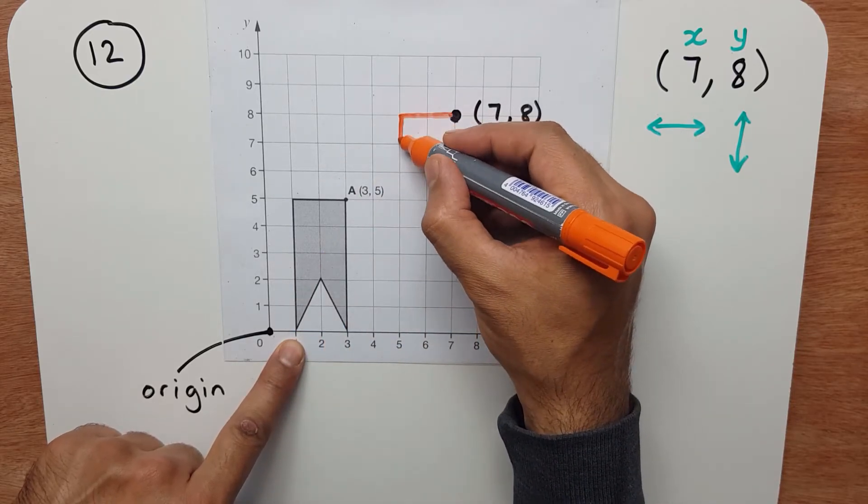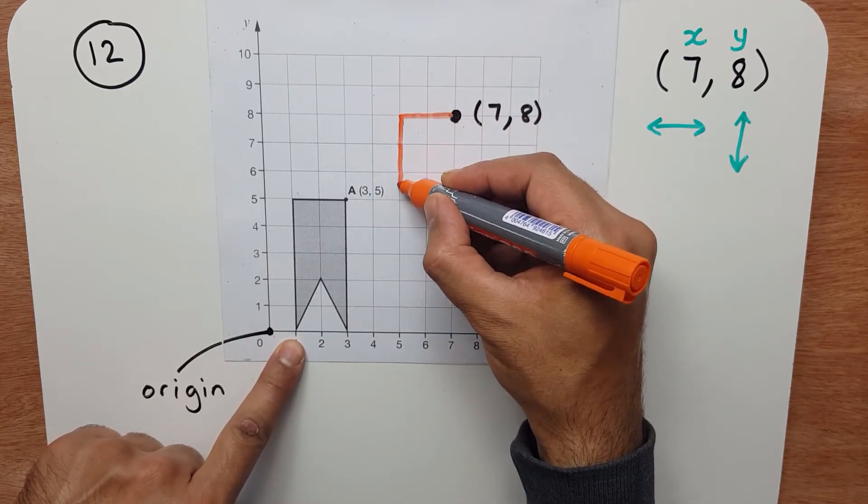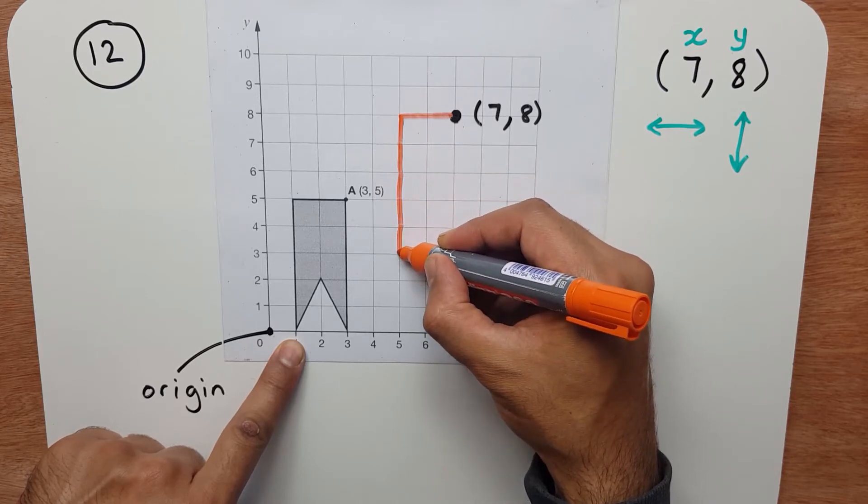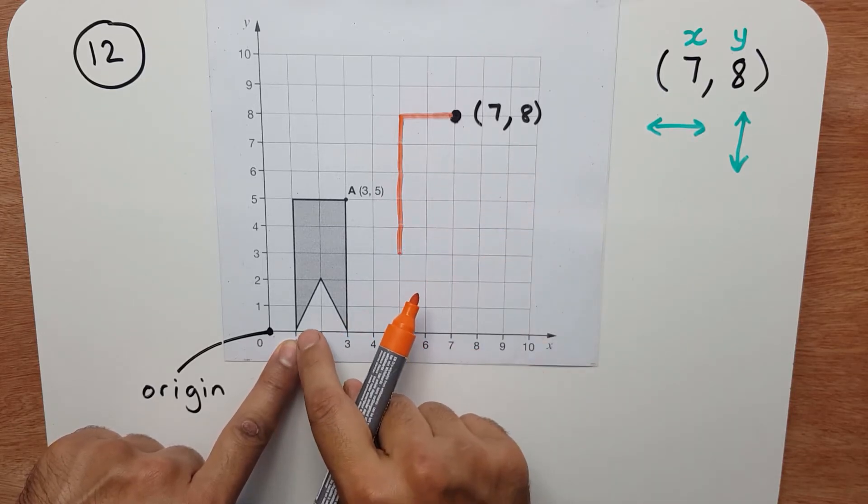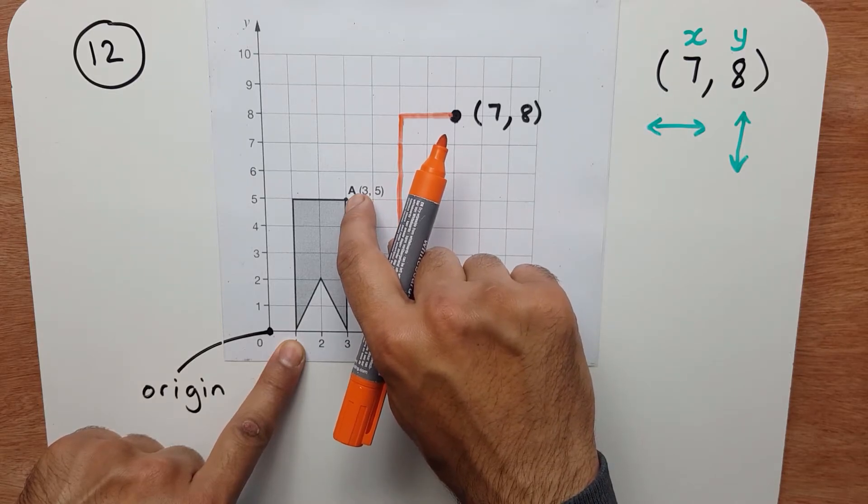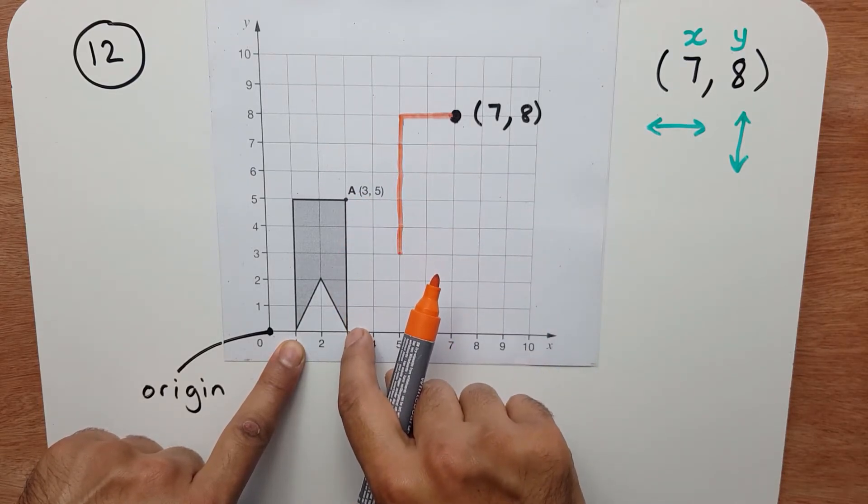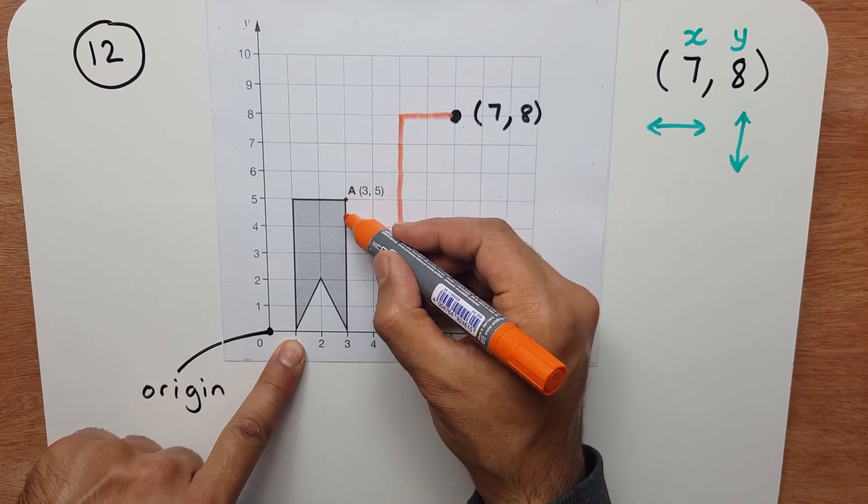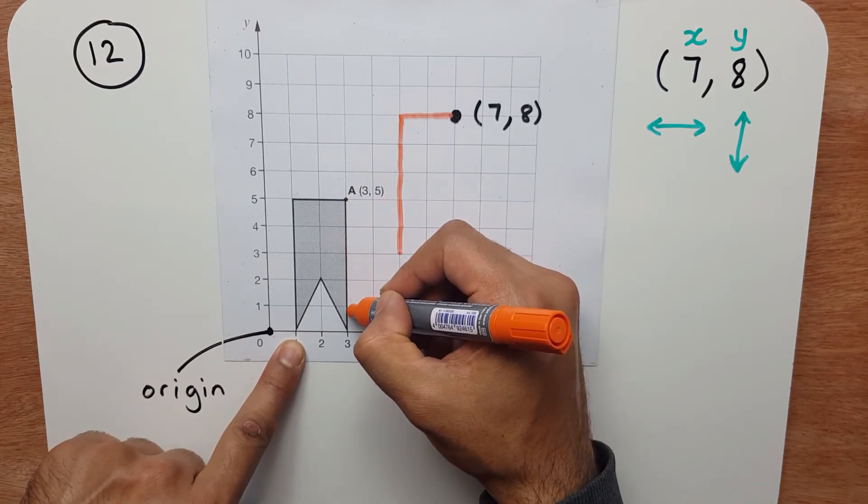So I go down 1, 2, 3, 4, 5. Now I can go from there, straight down there. So that's 1, 2, 3, 4, 5.